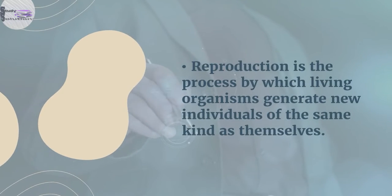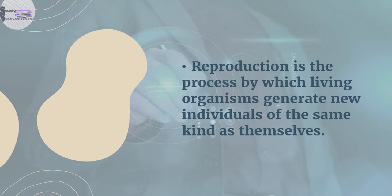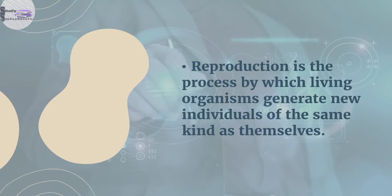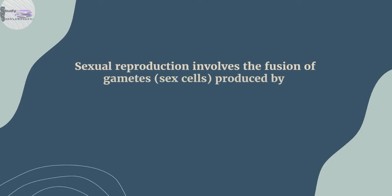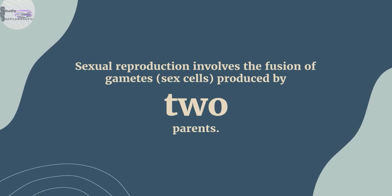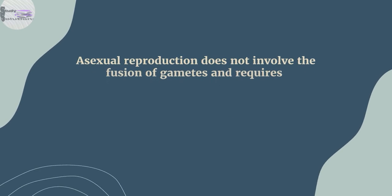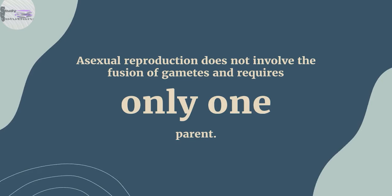Reproduction: the process by which living organisms generate new individuals of the same kind as themselves. Sexual reproduction involves the fusion of gametes produced by two parents. Asexual reproduction does not involve the fusion of gametes and requires only one parent.